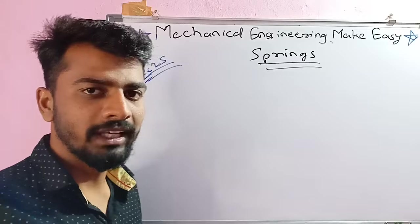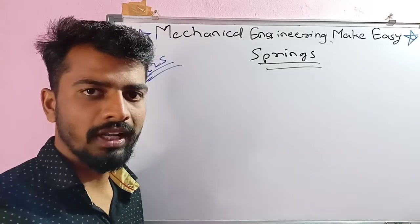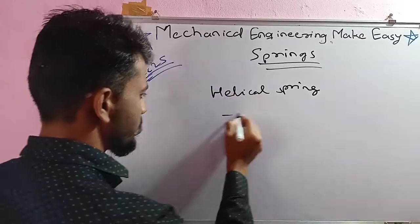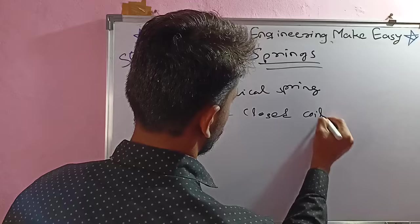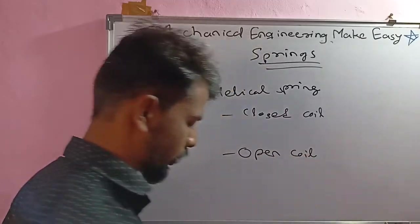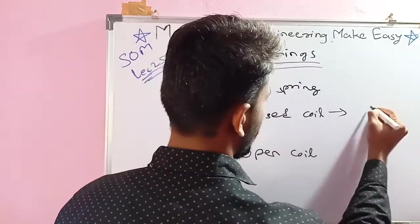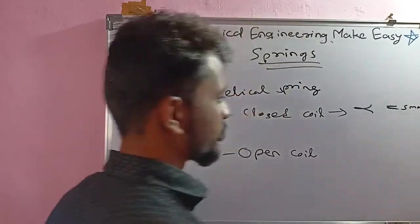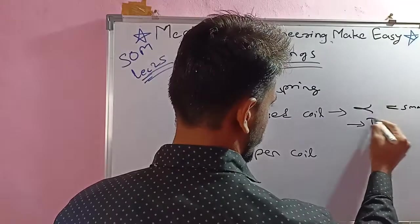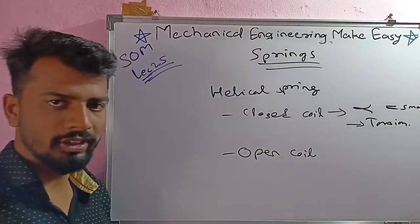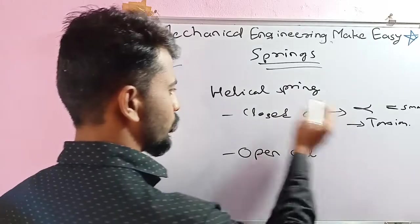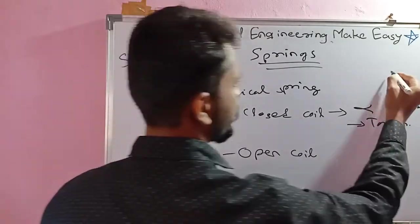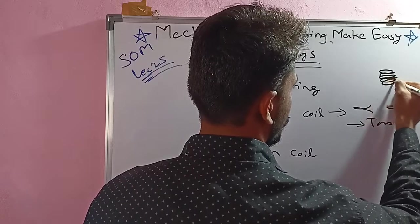Helical springs have two types: closed coil and open coil. In the case of a closed coil spring, the helix angle alpha is very small, meaning the spring is compact, and it is subjected to torsion only — there is no bending in a closed coil spring.